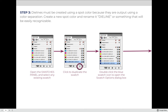The reason spot color matters for die lines is that when we output the artwork, we're going to send the artwork one direction to the printer and send the die line separately to the die maker. By isolating the die line as its own spot color — and not using that color anywhere else in the design — we can separate it and say the die maker gets the die line, the printer gets the artwork. They come back together when the die is used to stamp and cut the sheet.